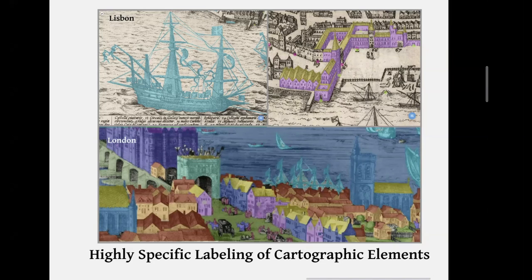It's Duke CS majors doing all the presentations. And look at this one — they've taken old-fashioned maps and used Python, Houdini, and LabelBox to make them more accurate.